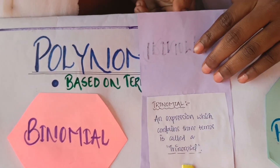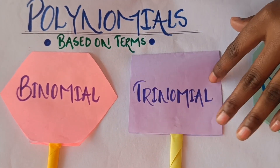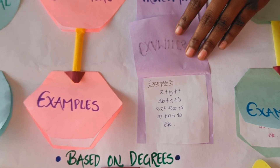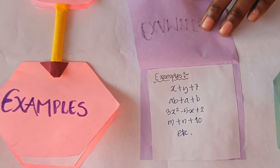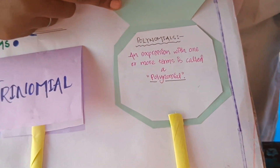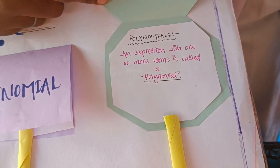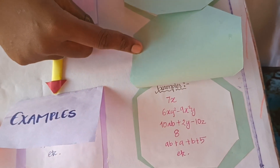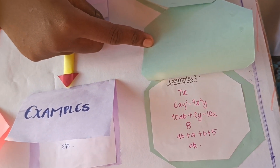Third is trinomial — expressions which have three unlike terms. For example, m plus n plus 3x squared minus 5x plus 2x squared. Fourth is polynomial — an expression which has one or more terms. For example, seven x, and six xy squared minus nine x.